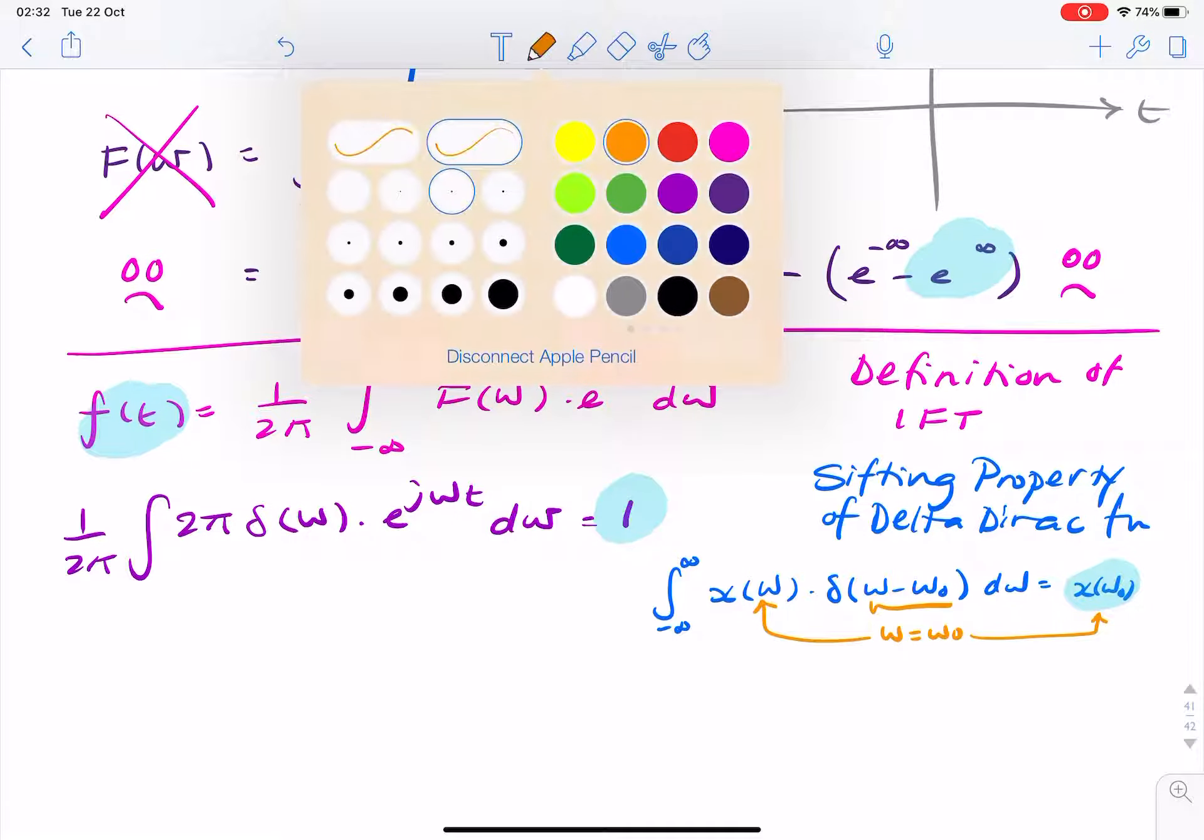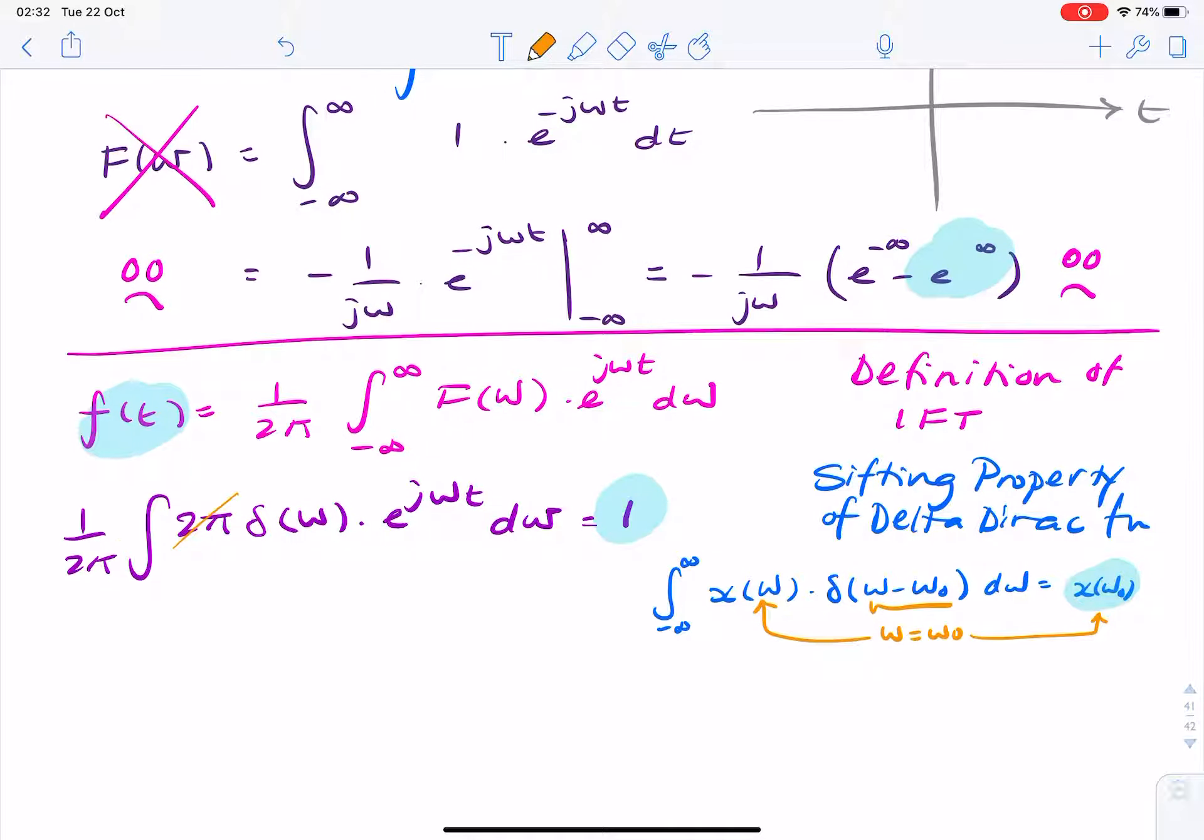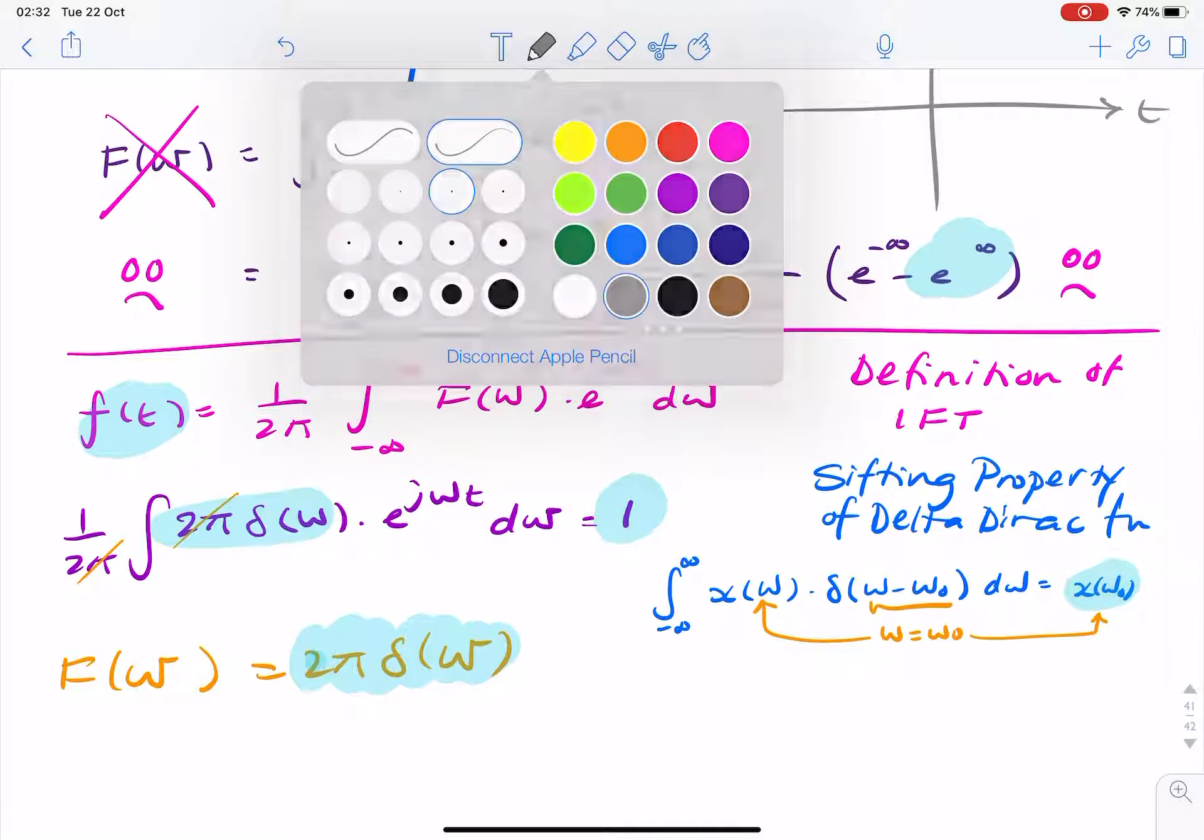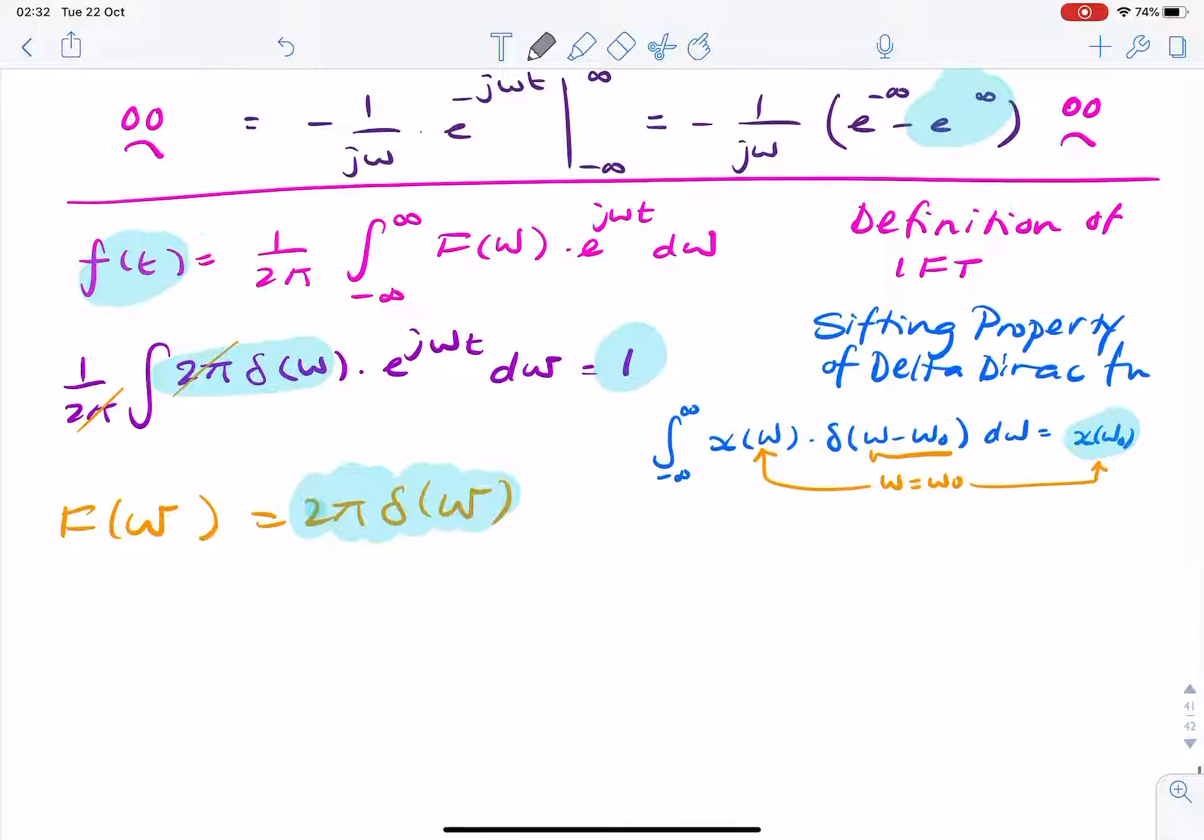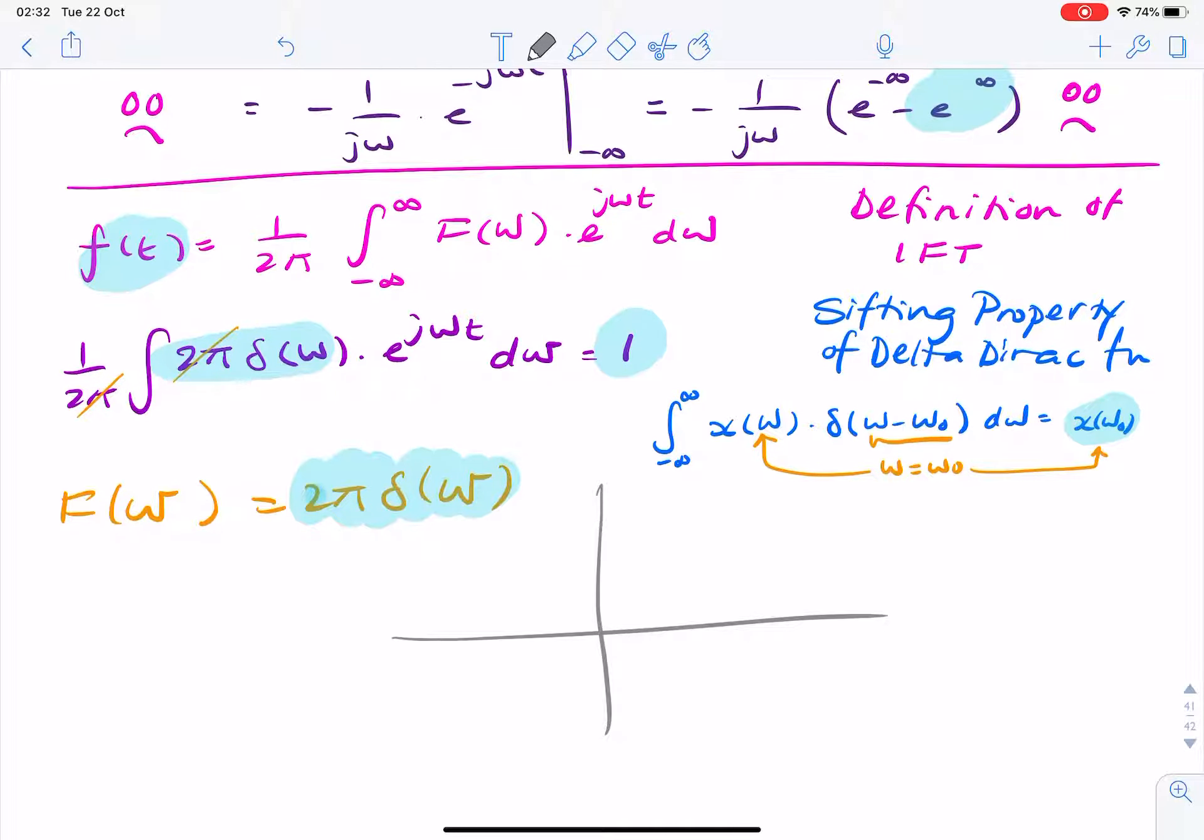And therefore, this will be my f of omega. So I can say f of omega equals 2 pi delta of omega. And this is exactly what we expected to see. So we started this question expecting the answer to be an impulse at 0 hertz. So we expected that impulse there.